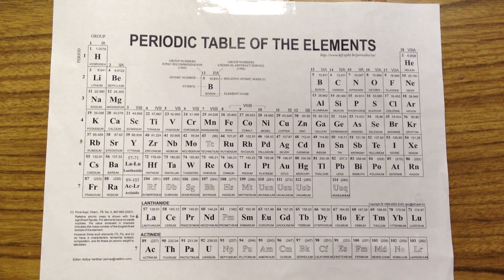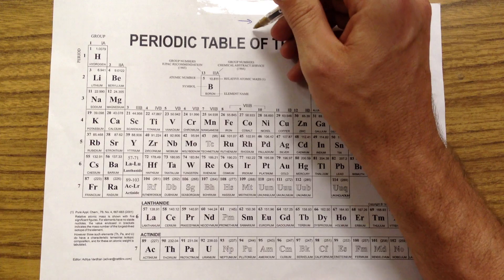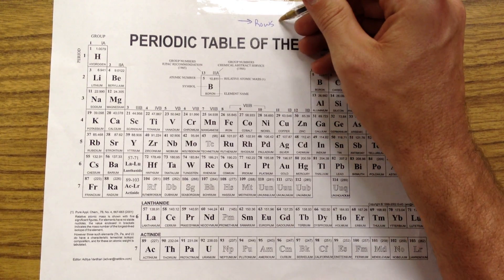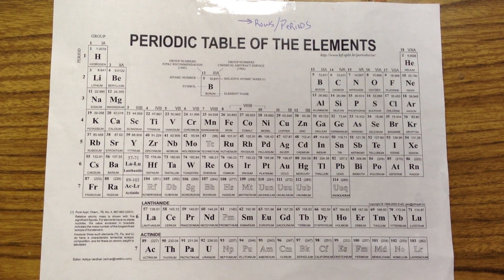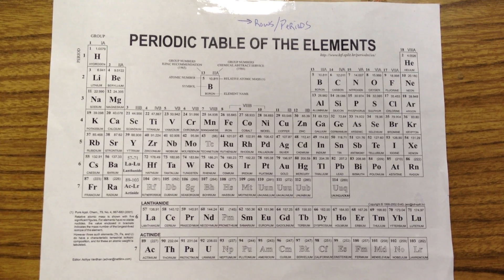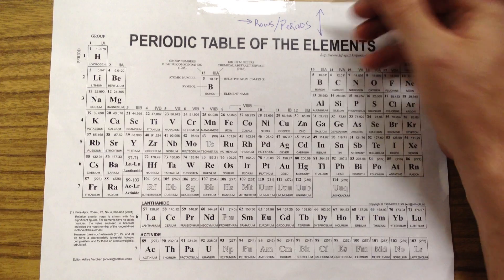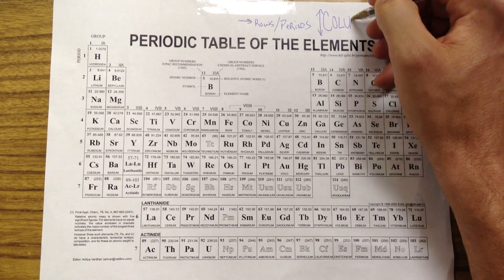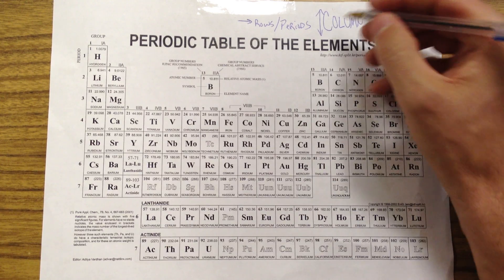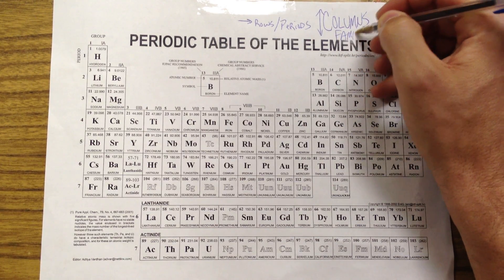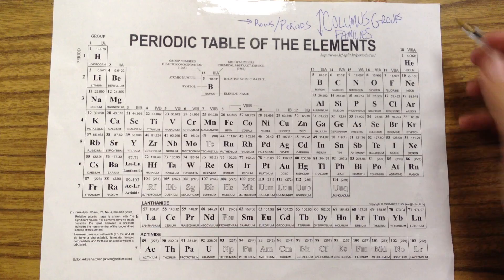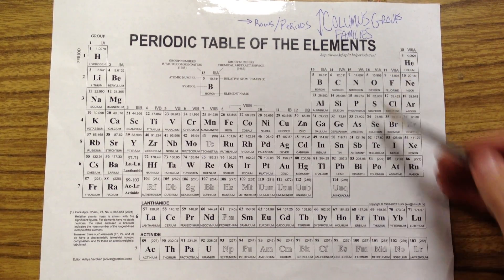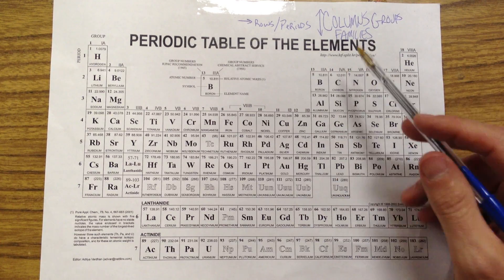So what I'm going to do now is I'm going to walk you through some of the different parts of the periodic table. First of all, anything that is horizontal, we call those rows, or we call them periods, either word is fine. If we are going vertical, those have lots of names. We call them columns, we call them families, we call them groups. So those are all kind of synonyms. This is a group, group, group, family, column, whatever.